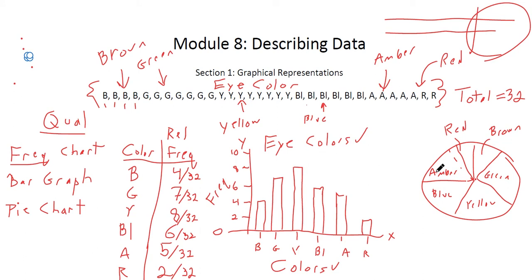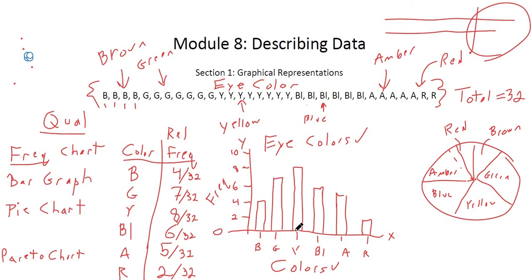Those are our three primary ways of representing qualitative data: frequency charts, bar graphs, and pie charts. There is also something called a Pareto chart — I'll note this as optional. A Pareto chart is just a bar graph with the bars in descending order. So yellow, the highest bar, moves to the front; then green second; then blue; then amber; then brown; then red. It's a special type of bar graph seen more in business contexts, but it doesn't change anything fundamental. Most of what we'll deal with are regular bar graphs.